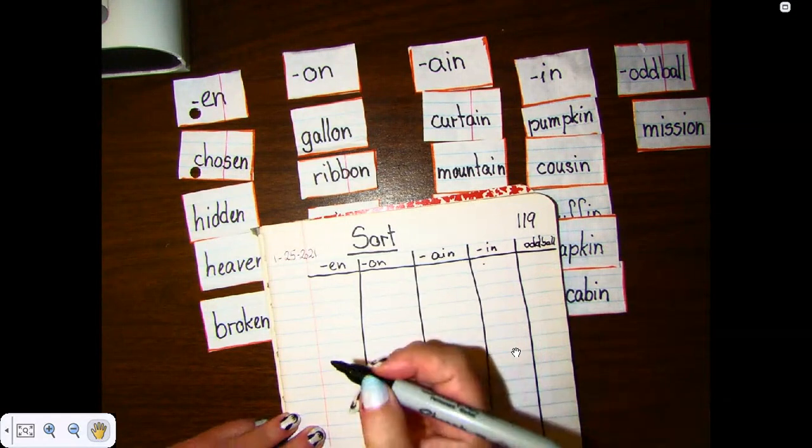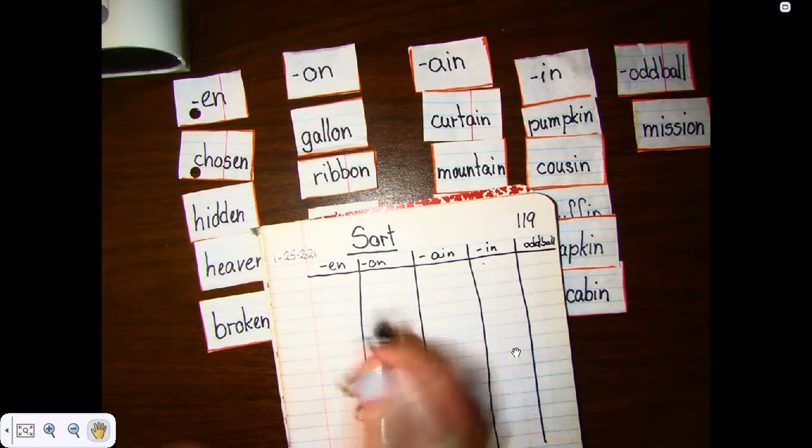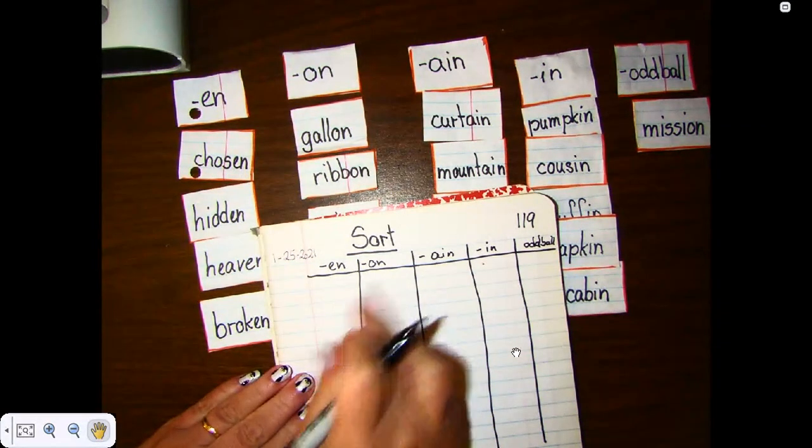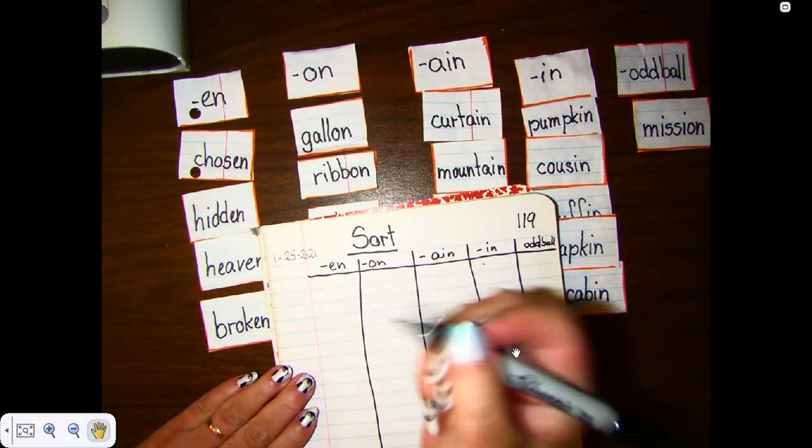All right. Remember that we write our neatest handwriting. And we are also going to write one line. And then we're going to skip one line. Because we know tomorrow we're going to code.